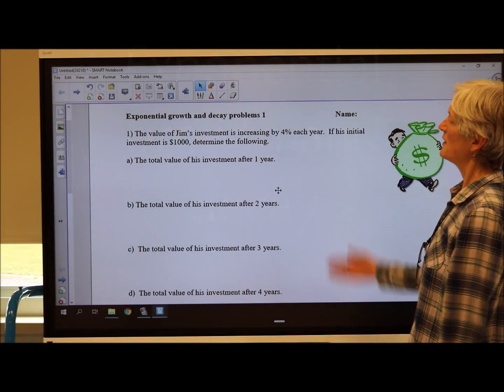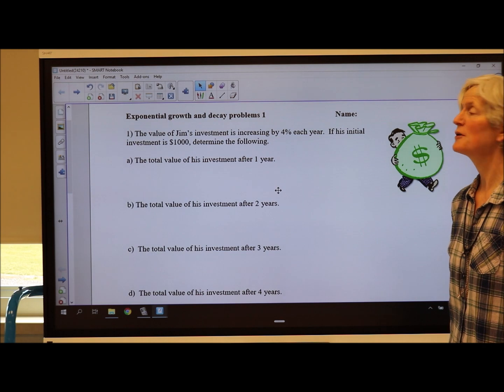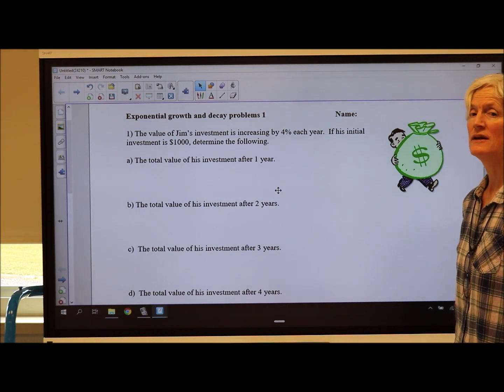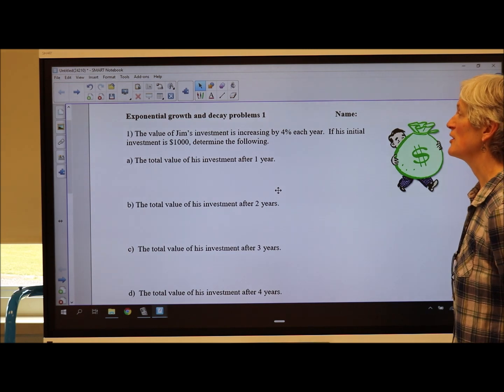So let's look at this example. The value of Jim's investment is increasing by 4% each year. If his initial investment is $1,000, determine the following.